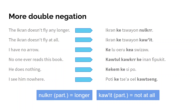'No one ever reads this book' is a very interesting sentence. In Na'vi we actually have three negations: 'kawtu' meaning 'no one,' 'kawkrr' meaning 'never,' and 'ke inan' meaning 'not read,' plus 'fìpukit' for 'this book.' In English we only have one — 'no one,' and then 'ever reads this book.' We don't say 'no one never does not read the book.' The 'never' changes to 'ever' when there's already a negation. But in Na'vi we need all three negations: 'kawtu kawkrr ke inan fìpukit,' because the sentence states no one reads the book, it is not read, and it also happens never.